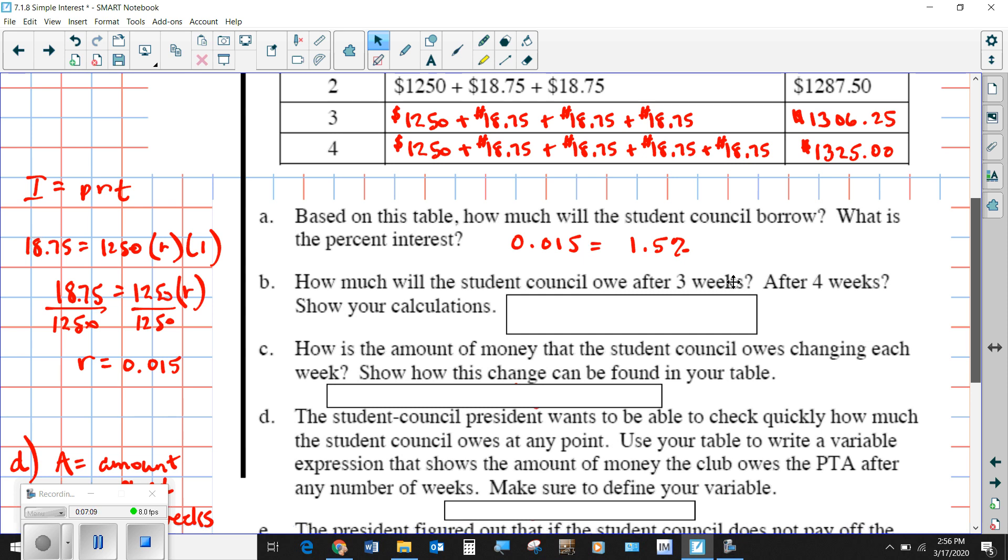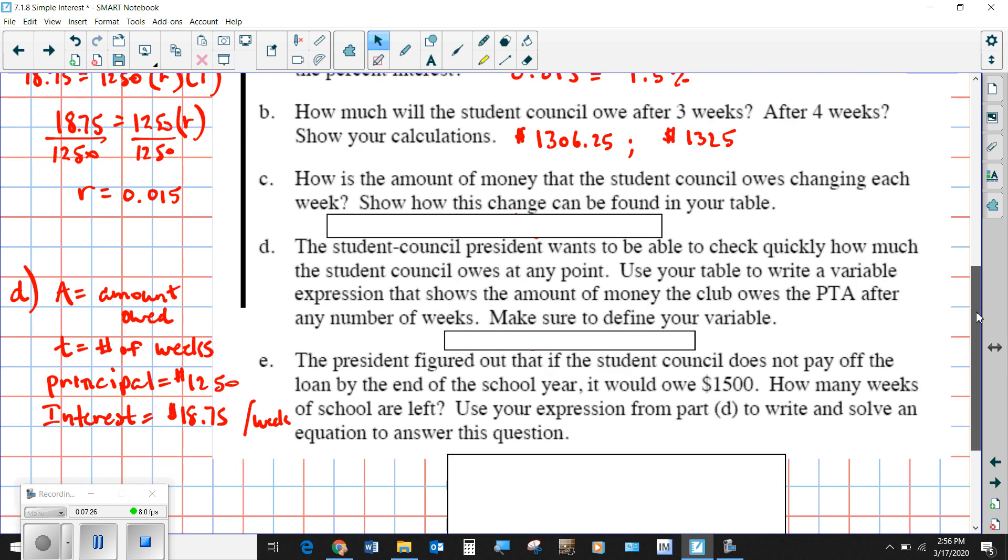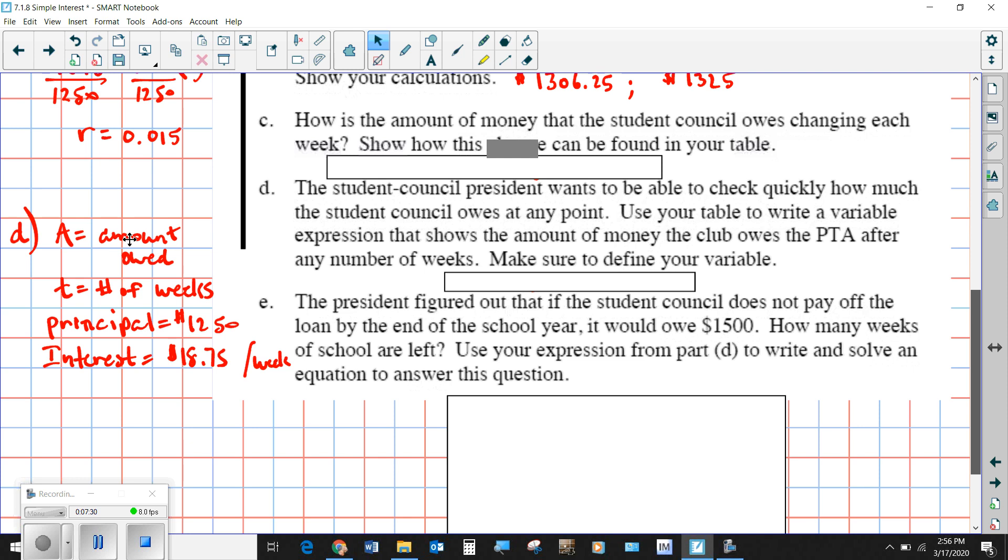How much will the student council owe after three and four weeks? We've got that information already up here in our table, so we're just going to copy those down. How is the amount of money that the student council owes changing each week? This is a little bit more complicated. If you look over here, problems C and D, we'll see how we get to this answer. Since it's increasing by $18.75 per week, that can go into a formula that says the new amount that you're going to have to pay is whatever you borrowed plus the amount of interest that you pay per week times the number of weeks. We can figure out after five weeks just by plugging in a five there, multiplying it and then adding to get the new amount that you have to pay.